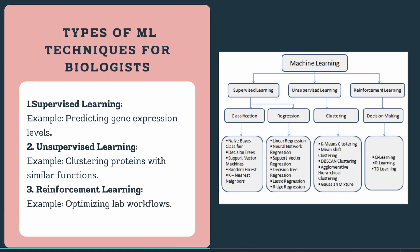There are actually several different types of machine learning techniques — not only supervised learning, but also unsupervised and reinforcement learning. In supervised learning, we train the model on labeled data to make predictions. For instance, we could use supervised learning to predict gene expression levels based on input data such as environmental conditions or drug treatments.